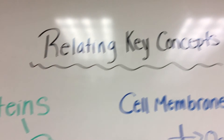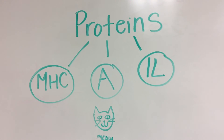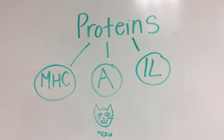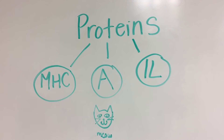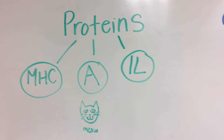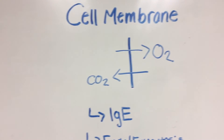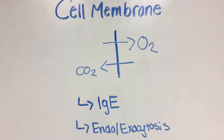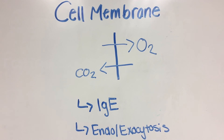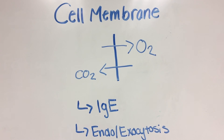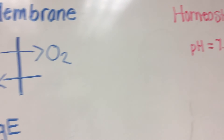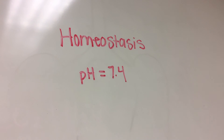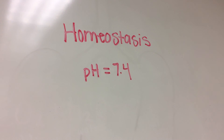Relating the key concepts: the main proteins involved are MHC proteins, which are antigen presenting cells. Cat dander allergen is a Fel-D1 protein. Interleukins are signaling proteins. Regarding cell membrane, oxygen exchange occurs across the cell membrane and IgE antibodies attach to mast cell receptors on the cell membrane. It also plays a key role in endocytosis and exocytosis. For homeostasis, this keeps a constant pH level for proper bodily function because respiration helps control the acid-base balance of the body.